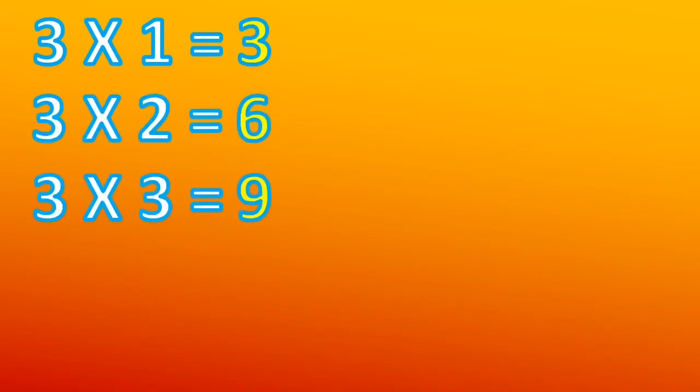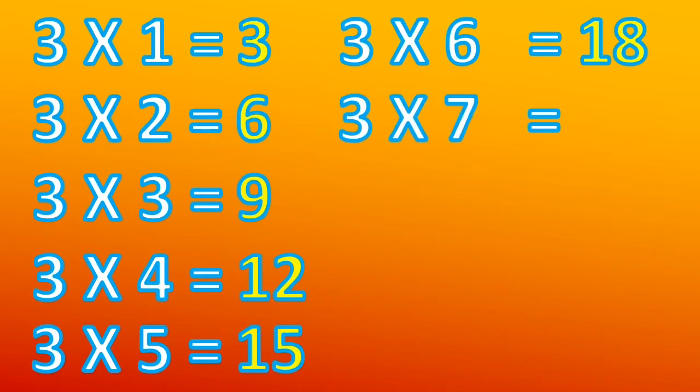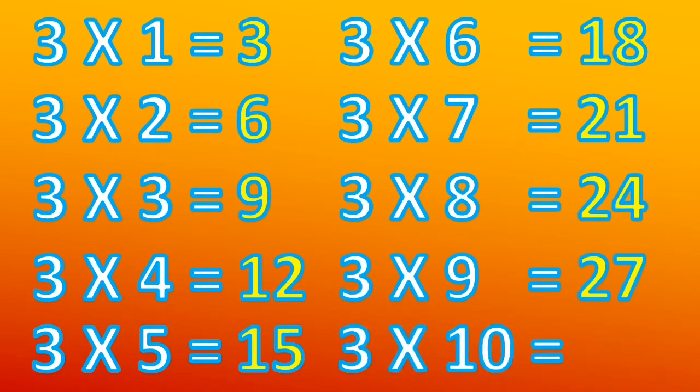Three ones are three, three twos are six, three threes are nine, three fours are twelve, three fives are fifteen, three sixes are eighteen, three sevens are twenty-one, three eights are twenty-four, three nines are twenty-seven, three tens are thirty.